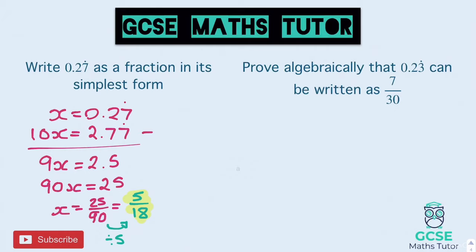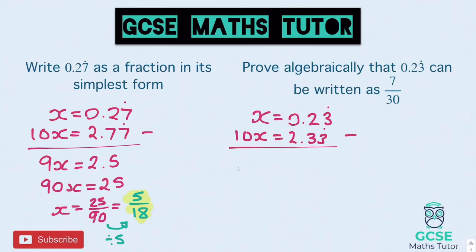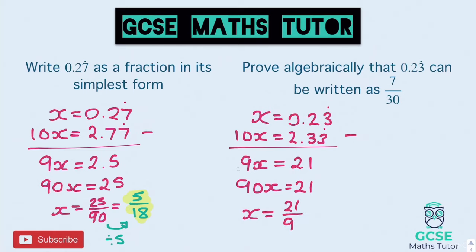For the next one: 0.23 recurring, show it can be written as 7 over 30. So x equals 0.23. Timesing both sides by 10, we get 2.33. Take those away from each other and you get 9x equals 2.1. Times both sides by 10: 90x equals 21. Write that as a fraction: x equals 21 over 90. To get from 21 to 7 you divide by 3, giving 7 on the top and 30 on the bottom. Make sure you show what you've divided by — that's how you're proving how you got from 21 over 90 to 7 over 30.